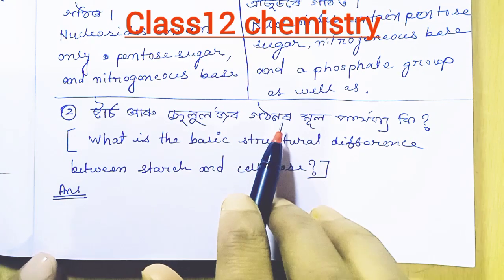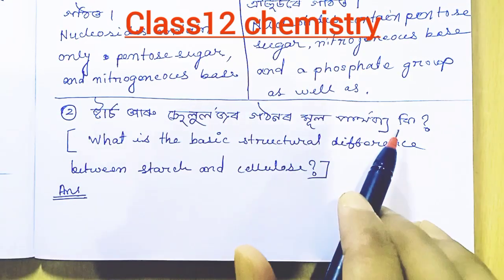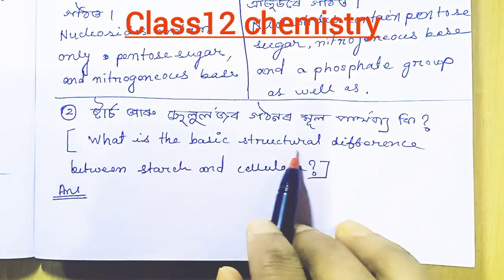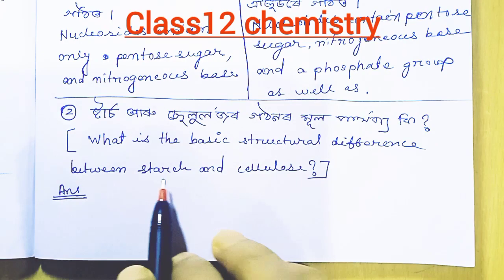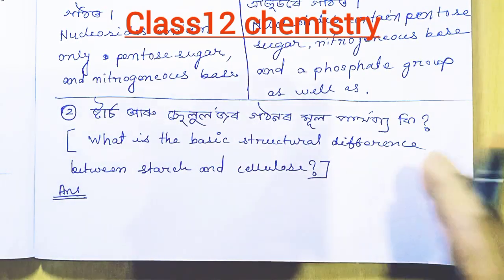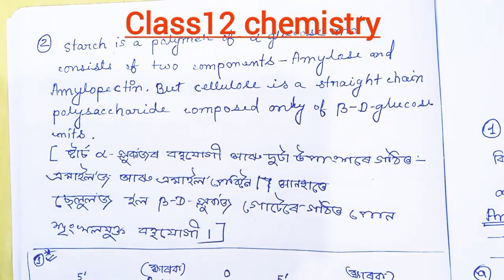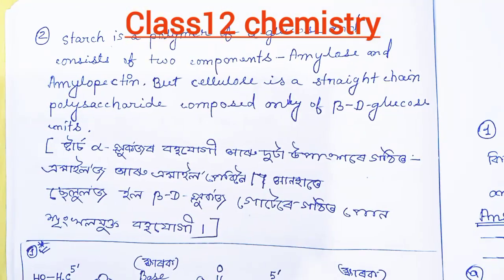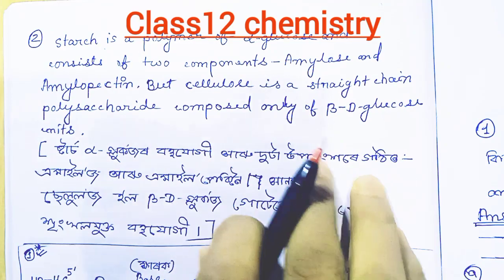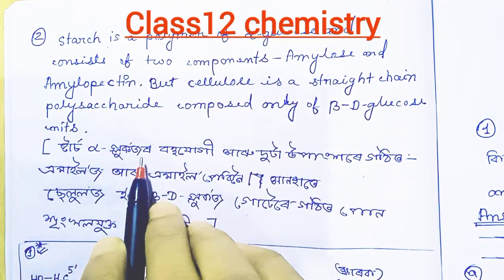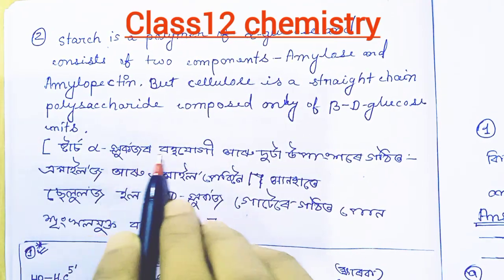Let's go to the next question. The main basic structural difference between starch and cellulose. We know that starch is made of alpha-glucose.